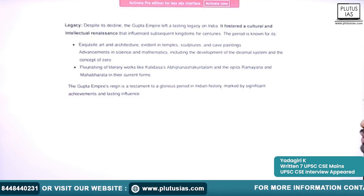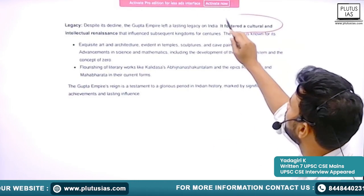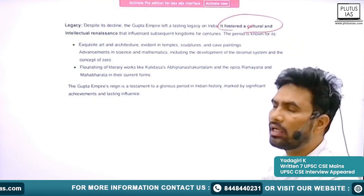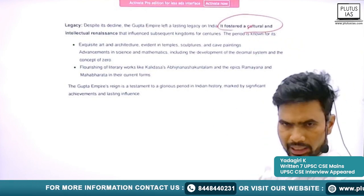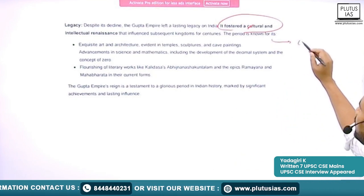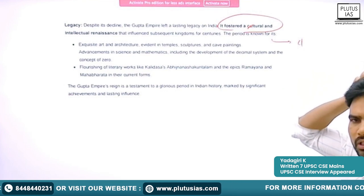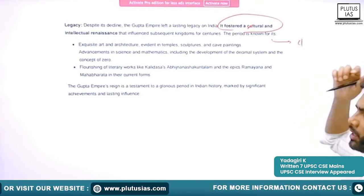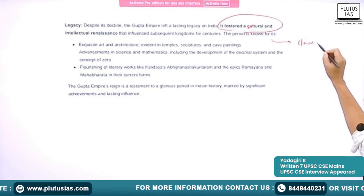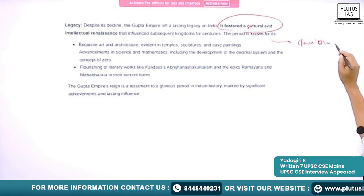The Gupta age fostered a cultural and intellectual renaissance. Though there is dispute about calling this age the 'golden age,' we can comfortably call it the 'age of classicism.'